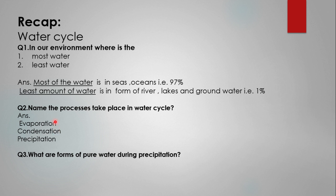Recall: what is evaporation? Evaporation is the conversion of liquid water into water vapors due to the heat of the sun. Condensation is the conversion of water vapors — that is, the gaseous state of water — into the liquid form on cooling.